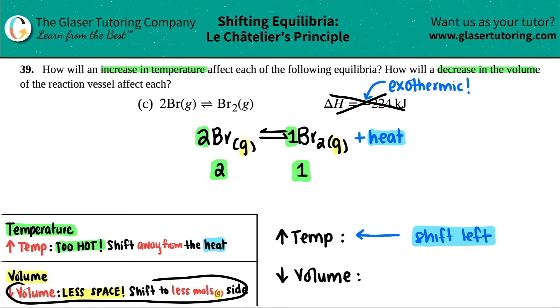Decreasing the volume, you shift to the less mole side. One is less than two. So I'm going toward the lower number. So in this case, I'm going to be going this way. And I will shift to the right.